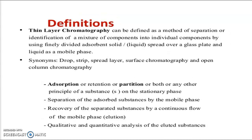Thin layer chromatography can be defined as a method of identification of a mixture of components into individual components by using finely divided adsorbent solid or a liquid spread over a glass plate, with a liquid as a mobile phase — the liquid being a suitable solvent. Synonyms include: drop, which is a spot marked on a TLC plate; strip, which is the plate; spread layer, which is the silica gel.